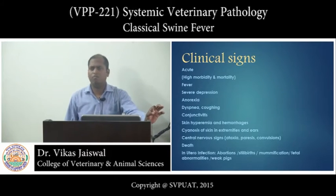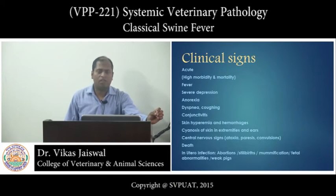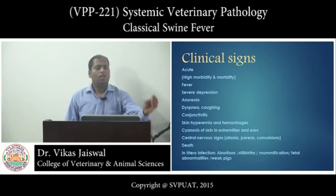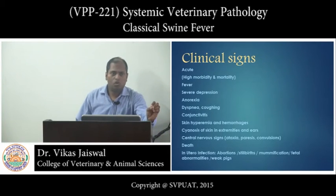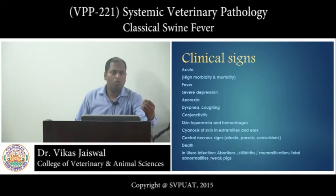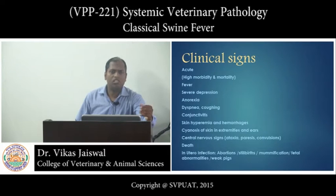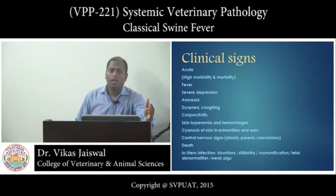Rapid viremia takes place. After this, the virus has specific affinity towards immune cells, so it replicates in the lymph node, bone marrow, Peyer's patches, spleen, etc. Then after three to four days, the virus is disseminated and invades all tissues, including pharyngeal mucosa, gastrointestinal tract, gallbladder, pancreas, thyroid, uterus, etc.